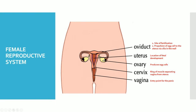The ovaries produce egg cells — the female gamete of sexual reproduction. The egg cells get secreted into the oviduct, which is a tube that connects the ovary to the uterus. The oviduct is the site of fertilization, and another important function of the oviduct is that it physically propels the egg all the way into the uterus via small cilia on the walls that push it along.